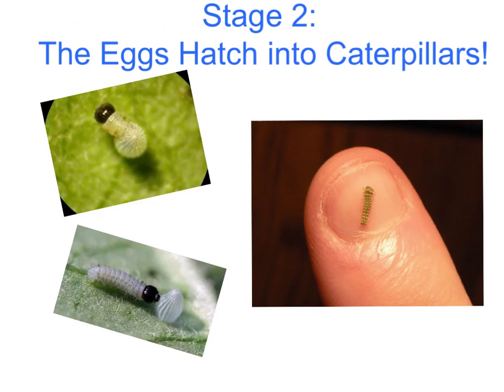The second stage happens when caterpillars hatch from their eggs. In this stage, they are very tiny. You can see how small they are when you compare the caterpillar to the size of the finger in this picture.